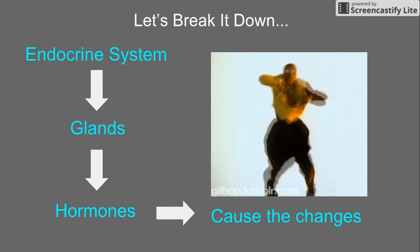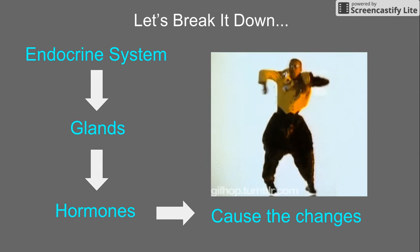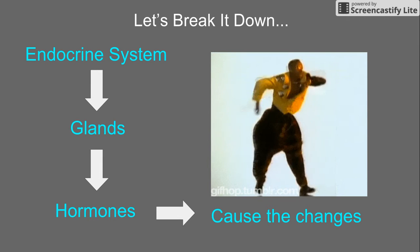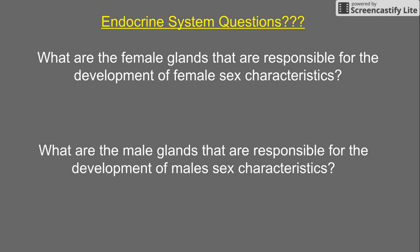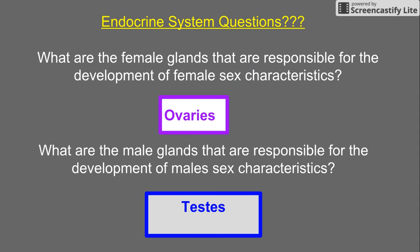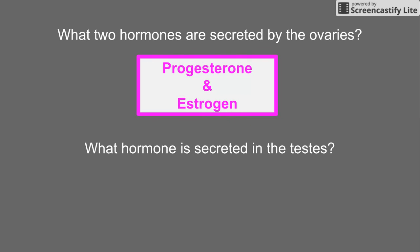Let's break it down. The endocrine system consists of a system of glands that secretes hormones, causing the changes in males and females during puberty, which occurs during adolescence. What are the female glands responsible for the development of female sex characteristics? The ovaries. What are the male glands? The testes. What two hormones are secreted by the ovaries? Progesterone and estrogen.